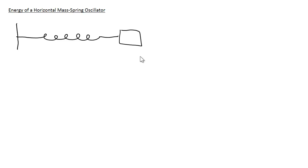In this video, we're going to take a look at the energy involved with a horizontal mass spring oscillator. I already have drawn on the screen a spring with the mass attached to it, and we're going to label a few different points: our equilibrium position, a point to the right of equilibrium, our maximum stretch position, and then a couple of points to the left.